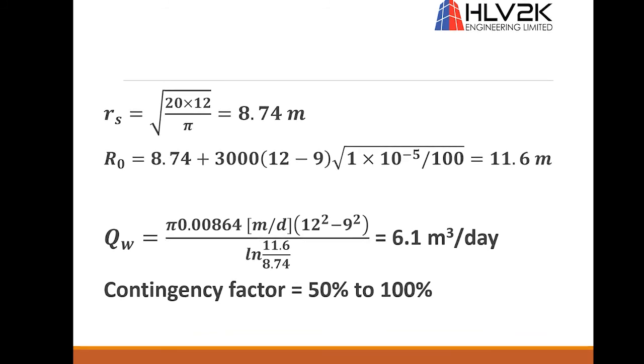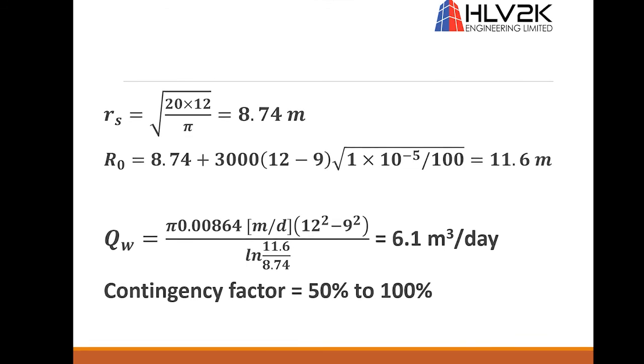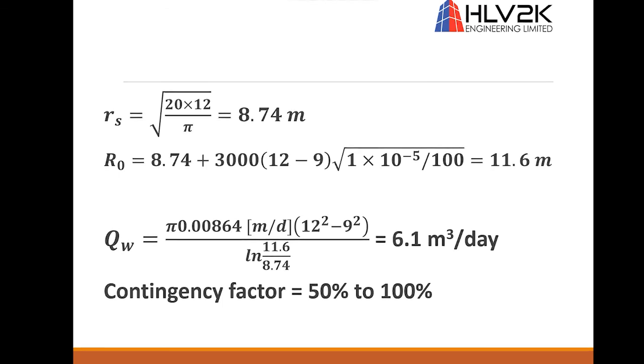I usually use 100% for cases that the dewatering rate is small. For example, in this case, 6.1, I would suggest to use 100% and multiply that by 2. If the dewatering rate is high, for example, 1000 cubic meters per day, 50% is usually enough and multiply that value by 1.5.